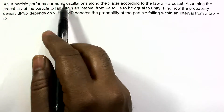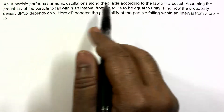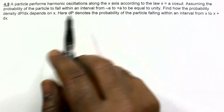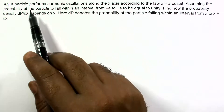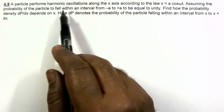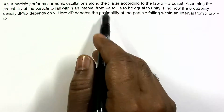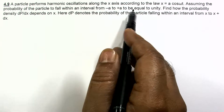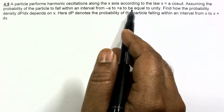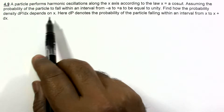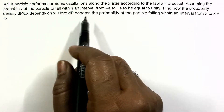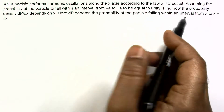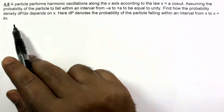A particle performs harmonic oscillations along the x-axis according to the law x equals a cos(ωt). Assuming the probability of the particle to fall within an interval from minus a to plus a to be equal to unity, find how the probability density dp/dx depends on x, where dp denotes the probability of the particle falling within an interval from x to x plus dx.